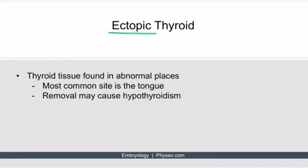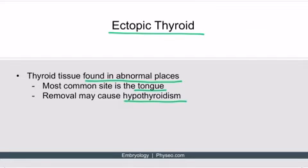Ectopic thyroid occurs when thyroid tissue is found in abnormal places. The most common site is the tongue, where it usually appears as a palpable mass. If it is the only functional thyroid tissue in the body, removing it will cause hypothyroidism.